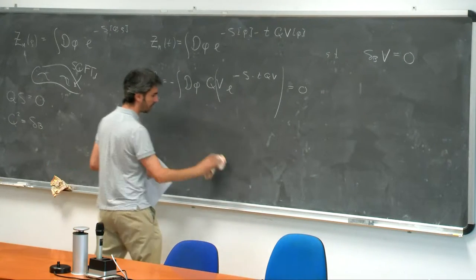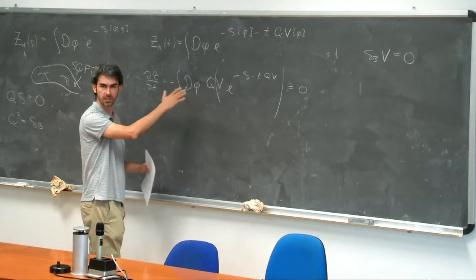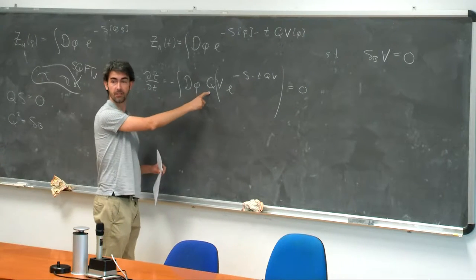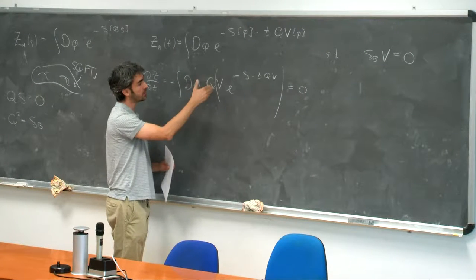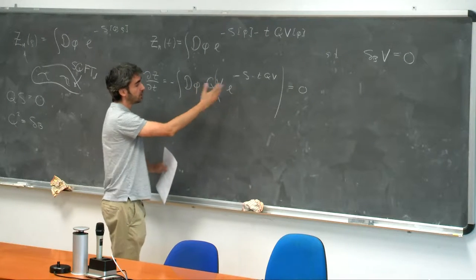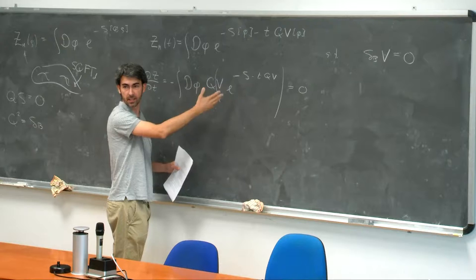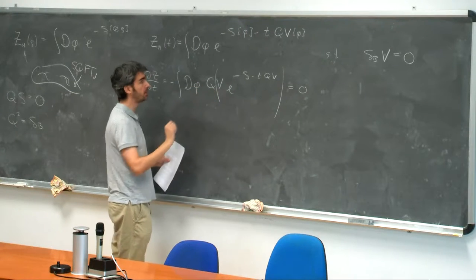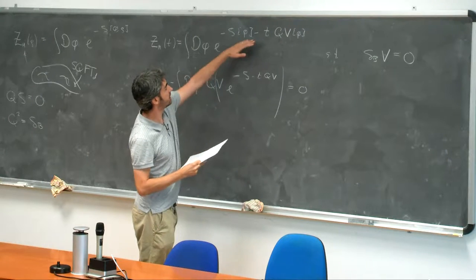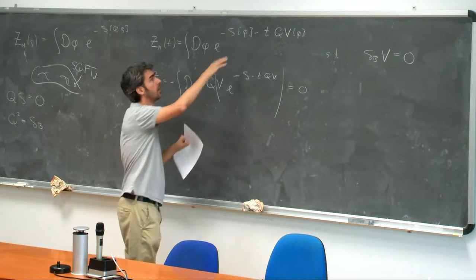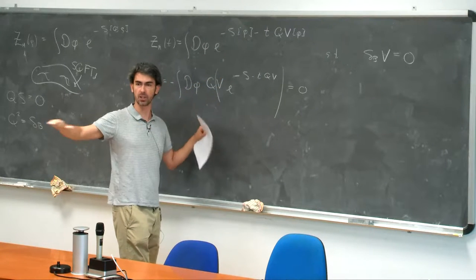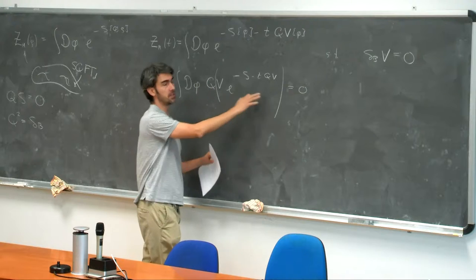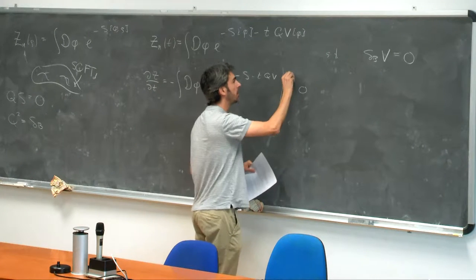Of course, we have to be a little bit careful, because the integral of the derivative is not automatically zero. This will be a total derivative in field space, not on the manifold M, because this acts on the fields. The space of fields is not compact, so the integral of the total derivative is not automatically zero — in general, it's some boundary terms. However, if these functionals give you an exponential suppression for large values of the fields, then we can be ensured that there are no boundary terms at infinity in field space. This is something to be careful about — it is not always the case.